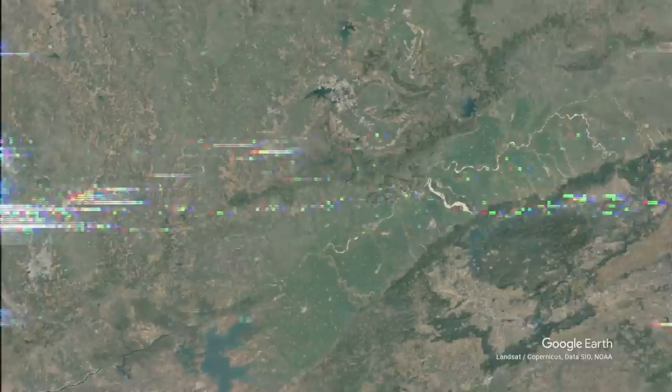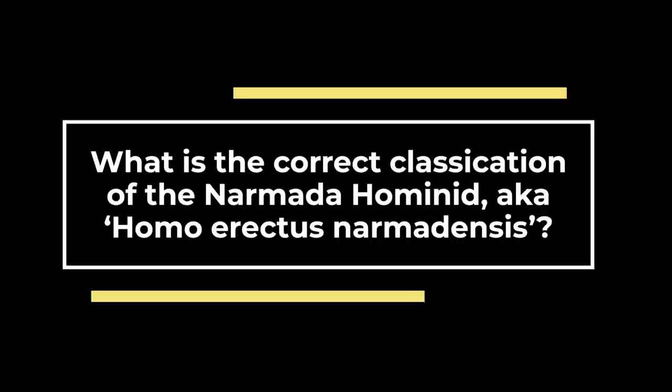Remarkably, the understanding of human evolution in South Asia primarily rests on a solitary partial skullcap from central India, but its disputed taxonomic status has blurred the picture of human migrations.